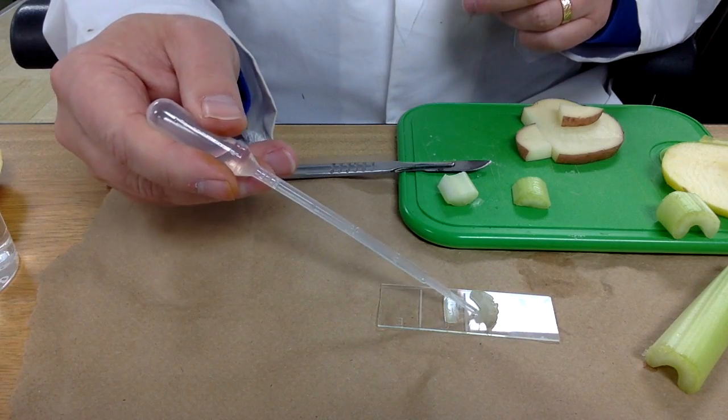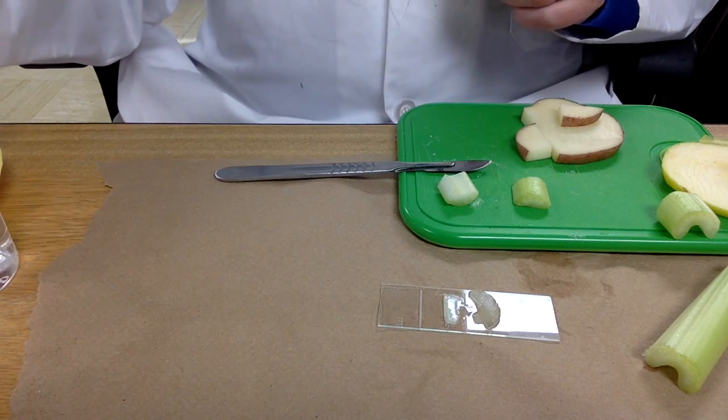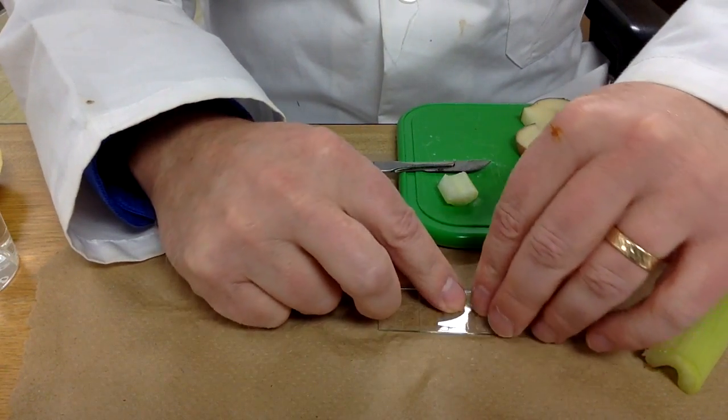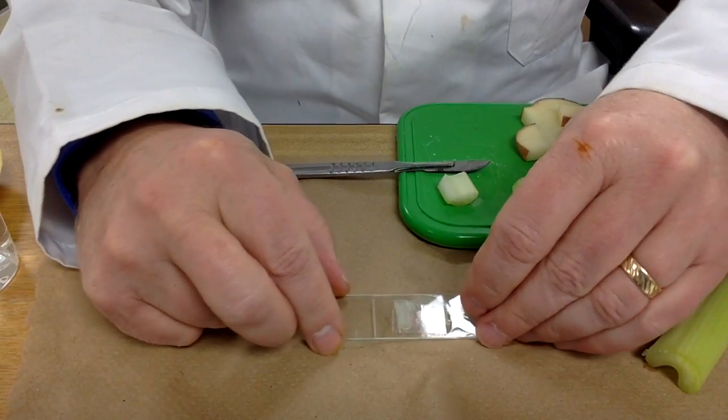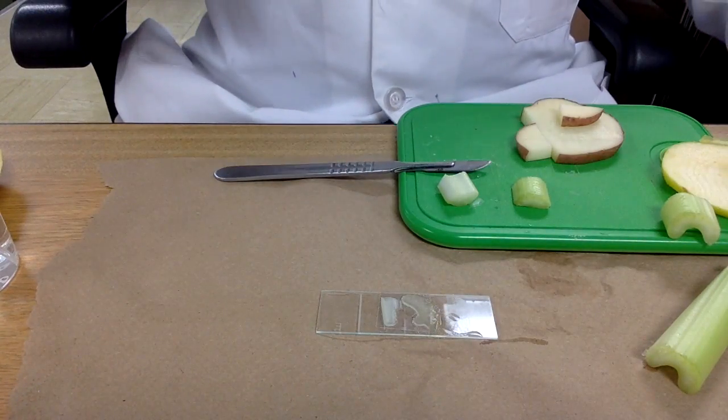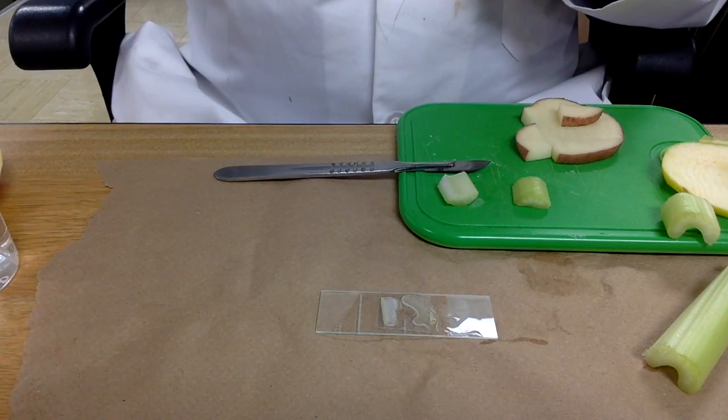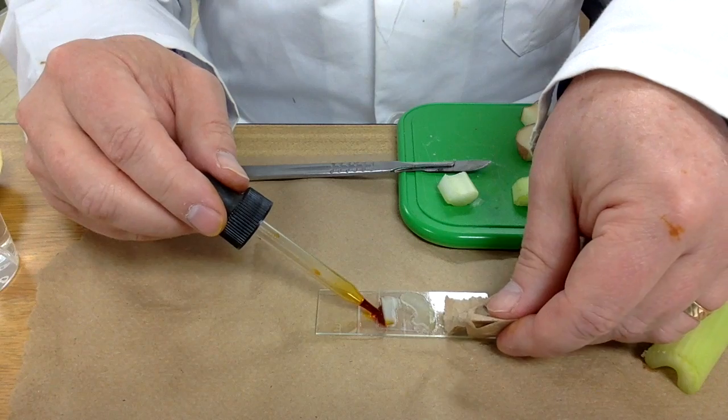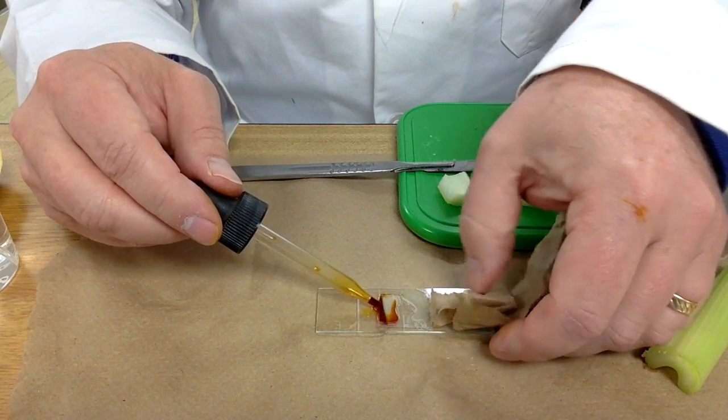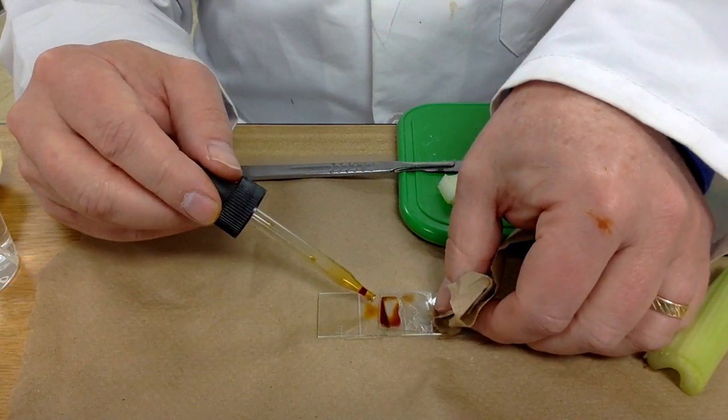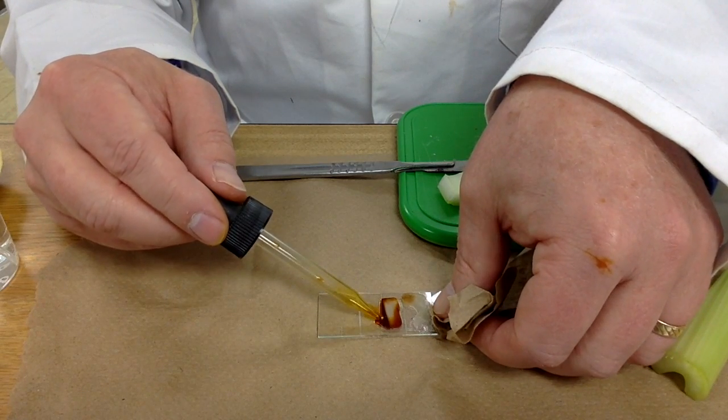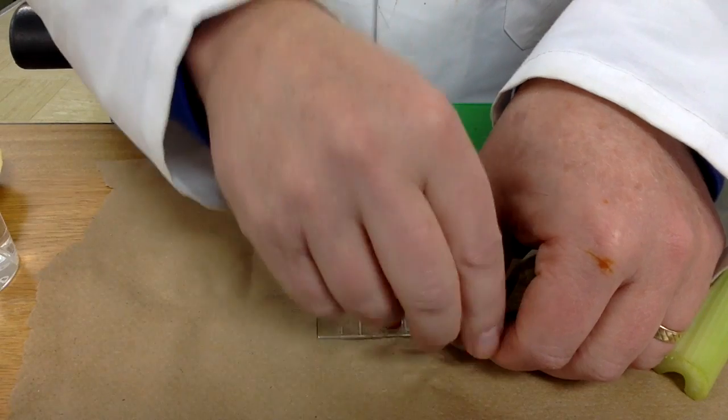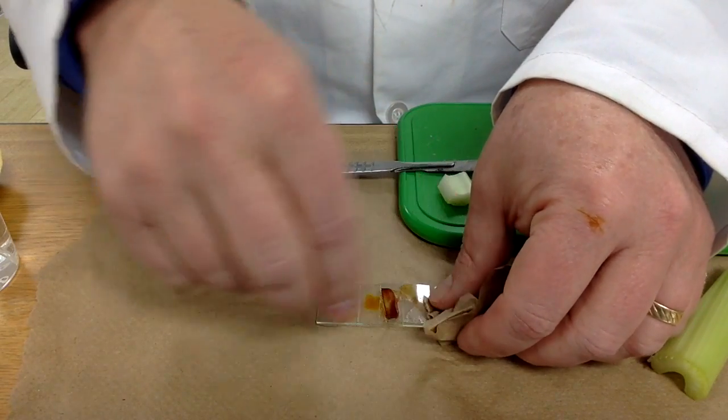Add some water, put on a cover slip. And again, after viewing that under the microscope, you can add some Lugol's iodine solution and use a paper towel to help pull that across to stain your samples.